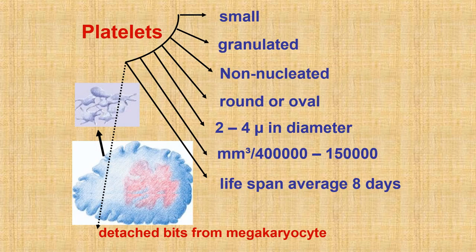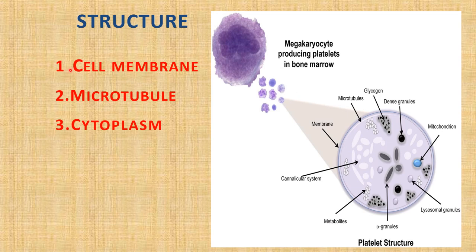Platelets are small granulated, non-nucleated, spherical or oval cell bodies having a diameter ranging from 2 to 4 micrometers. The normal count is 1.5 to 4 lakhs per mm³, with an average lifespan of 8 days. There is considerable variation in size even in the same individual. Platelets are detached bits from megakaryocytes.